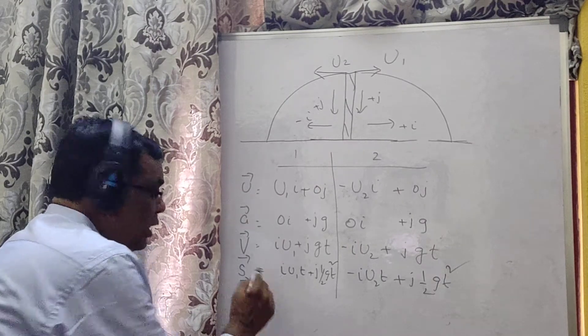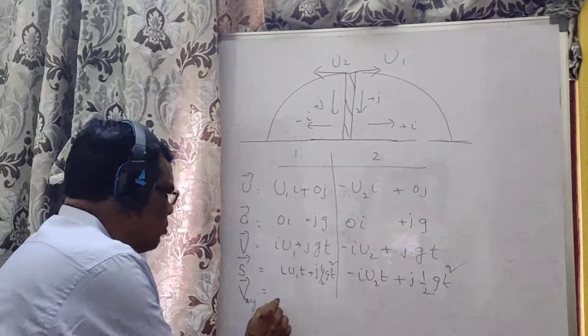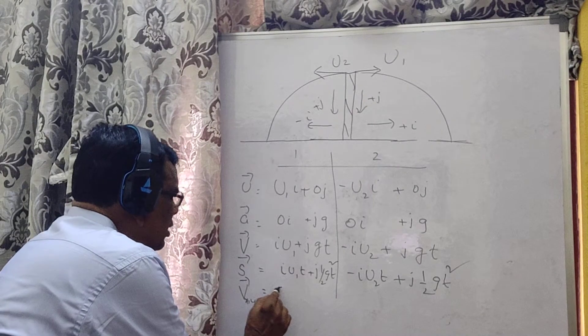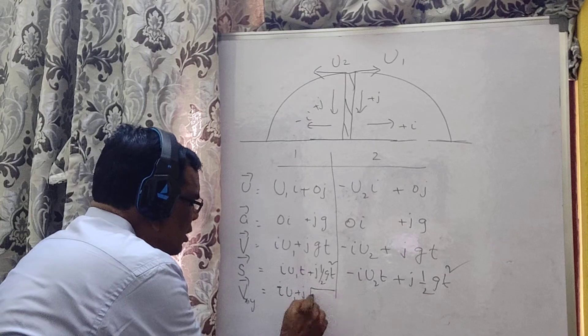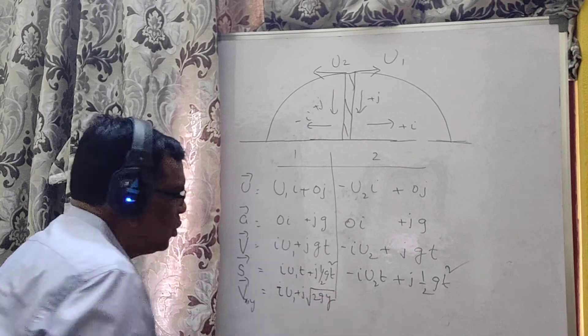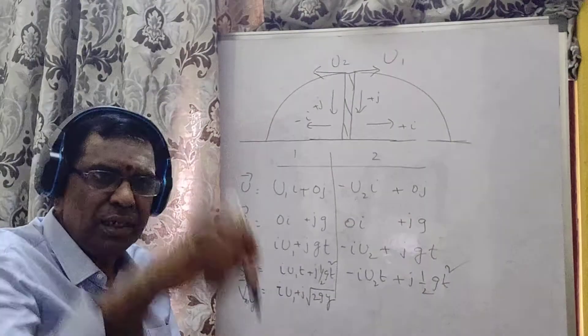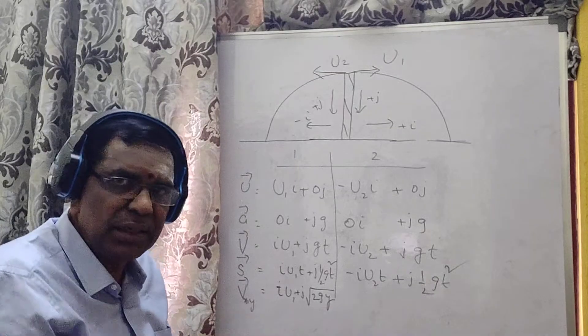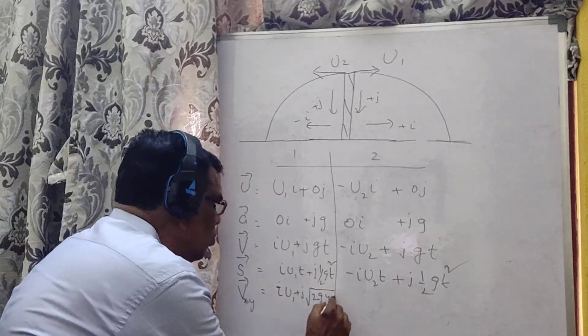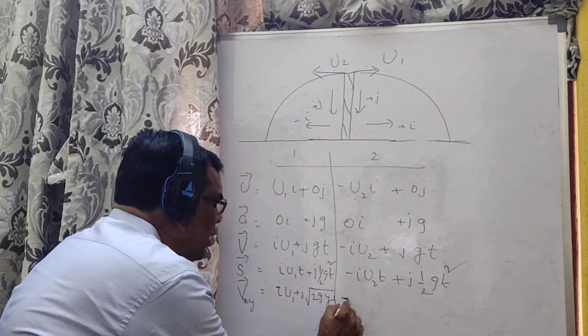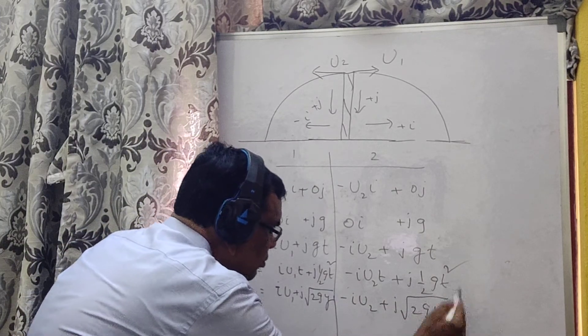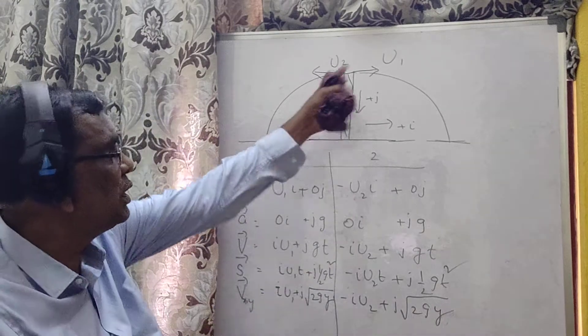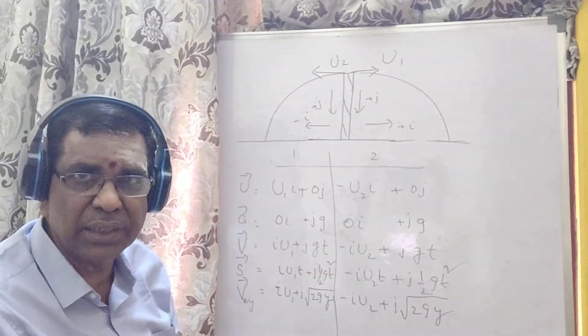And then finally, you can write v²xy as iu1 plus 2gy. y positive downward, acceleration g downward, so both are plus. And here it is minus iu2.